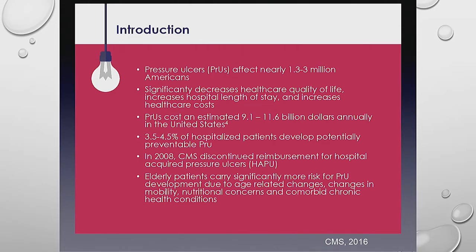Estimates by CMS indicate that up to 11.5 billion dollars is spent on pressure ulcer treatment and care in the United States. Up to 4.5% of pressure ulcers acquired in the hospital were considered preventable. In 2008, CMS discontinued reimbursement for hospital-acquired pressure ulcers. Elderly patients are at much higher risk due to comorbidities, age-related changes, debility, and nutrition aspects.